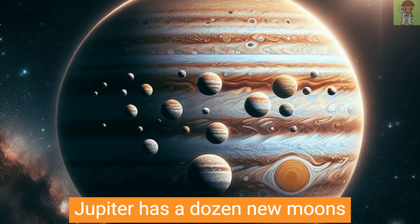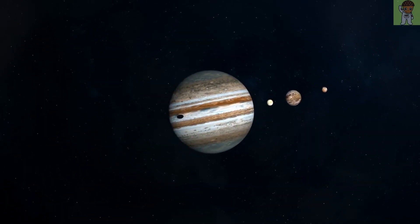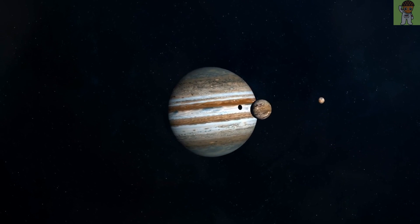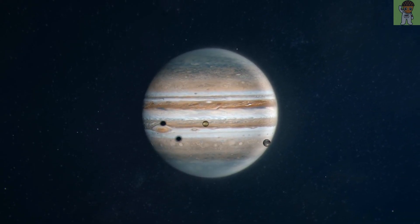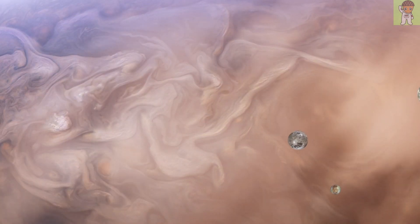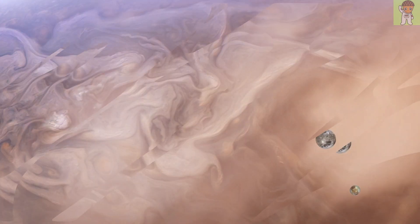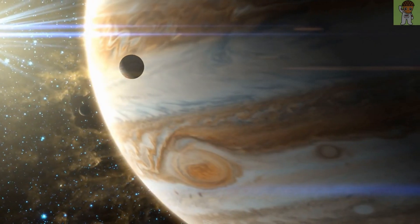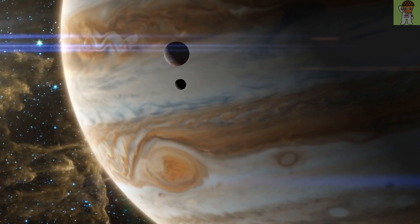Jupiter has a dozen new moons. Scientists confirmed the existence of 12 new moons around Jupiter, bringing the planet's satellite count to 92. At the time, this set a new solar system record. The newly discovered Jovian moons are small, ranging from 0.6 to 2 miles wide, and most of them have wide orbits. Nine of the 12 moons take more than 550 days to orbit Jupiter.